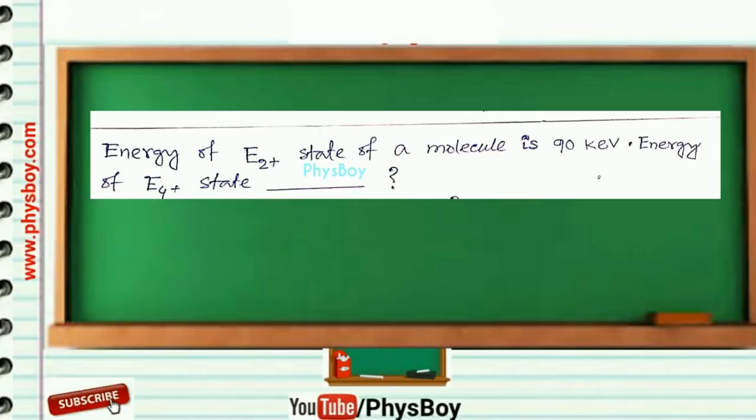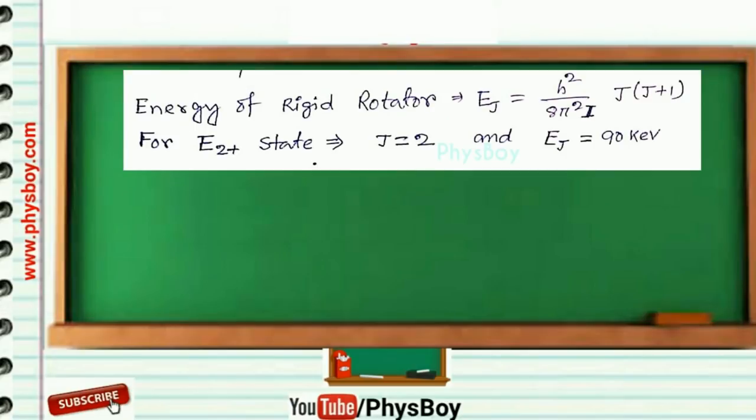You know energy of the rigid rotator can be written as Ej = h²/(8π²I) times j(j+1). For E2+ state, j = 2.